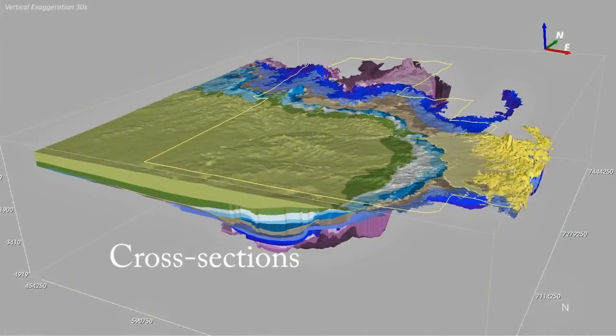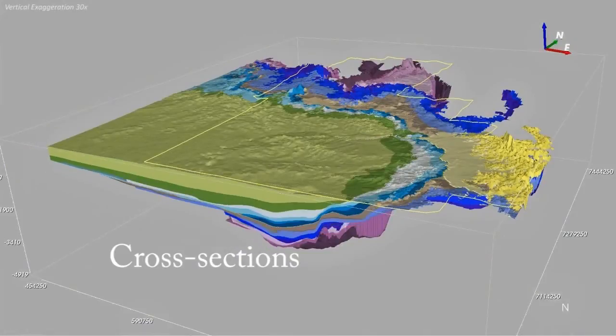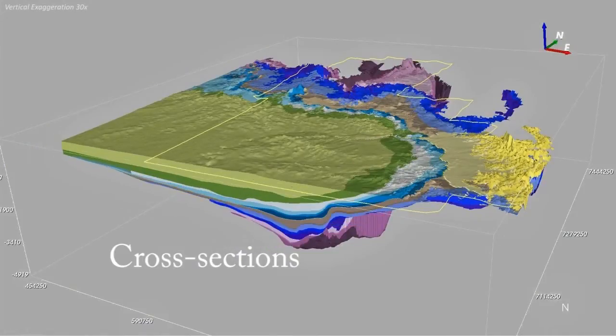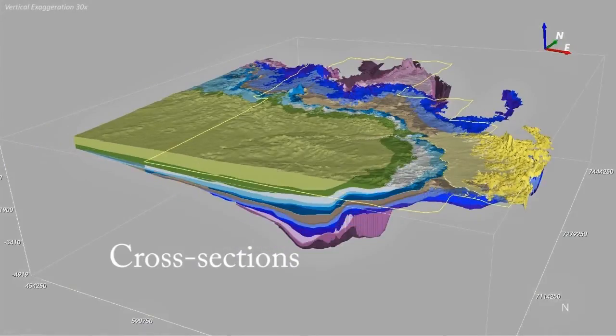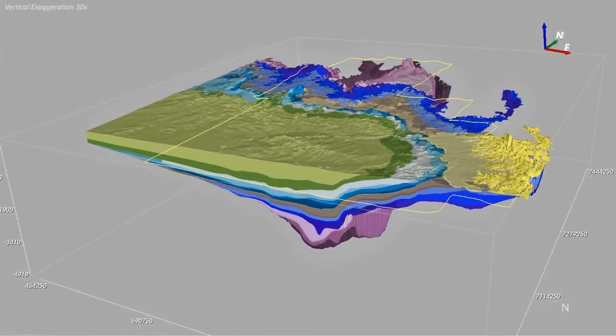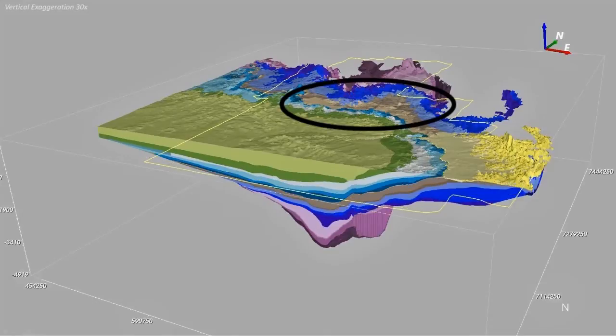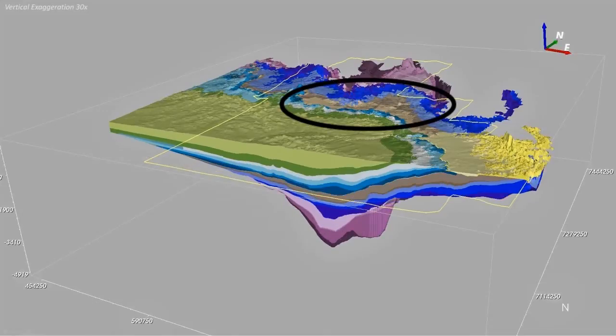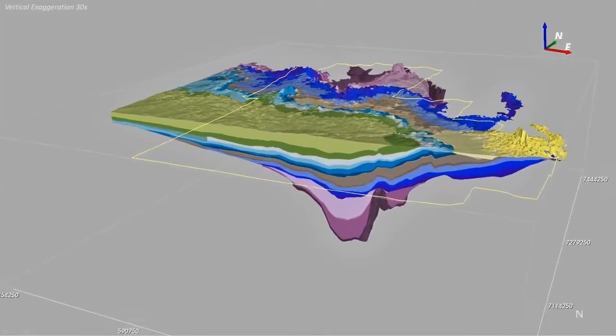The depth and thickness of each formation varies across the area. The formations in the Surratt Basin are generally exposed at the surface in the north.